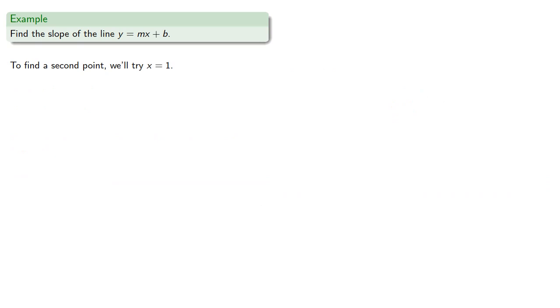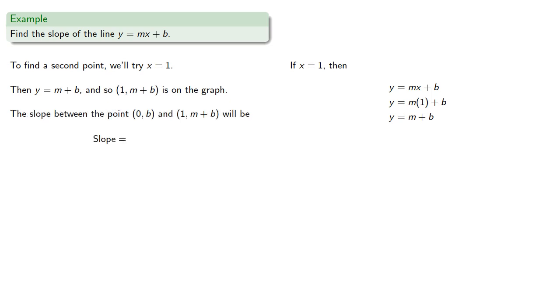To find a second point, we'll try x equal to 1. If x equals 1, we find that y is equal to 1, m plus b. And so, 1, m plus b is on the graph, and the slope between our two points, 0, b, and 1, m plus b will be...